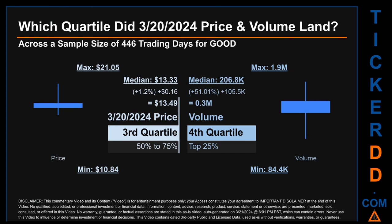Hello, my name is Maria. Which quartile did March 20th, 2024's price and volume land in across a sample size of 446 trading days? The maximum end-of-day price for GOOD was $21.05 while the minimum was $10.84. Within that range, March 20th's price of $13.49 landed within the third quartile, placing it within the 50 to 75 percent range of all sampled end-of-day prices. The day's volume landed within the fourth quartile, marking it within the top 25 percent of all sampled daily volume, which saw a max of 1.9 million and a minimum of 84,400.